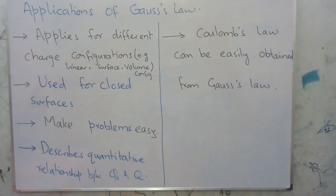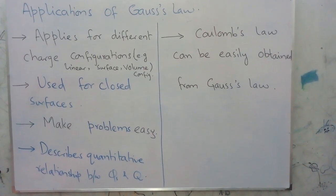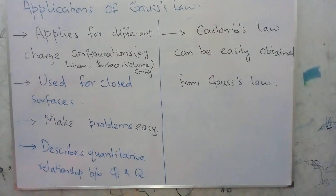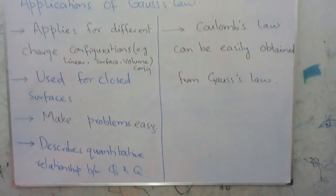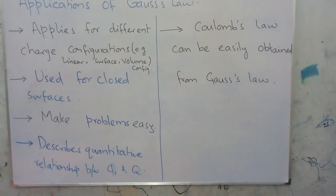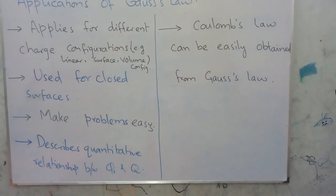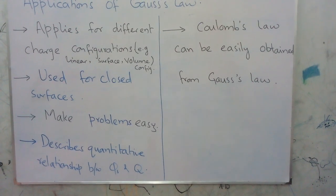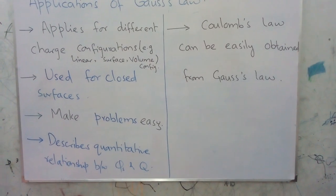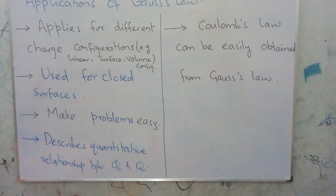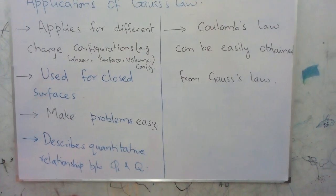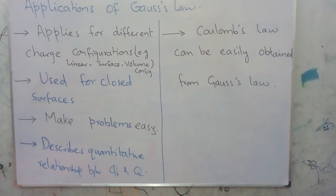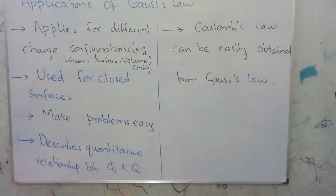There are many reasons to study Gauss's law in physics. The first reason is that Gauss's law can be applied for different charge configurations — like linear, surface, and volume configurations. In all such cases, we consider a closed imaginary surface, and this closed imaginary surface is called the Gaussian surface.